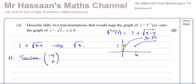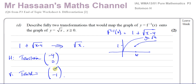Then it has to go 1 unit down for us to go from y = 1 + √(x − 4) to y = √x. So the second transformation is a translation of (0, −1) — one unit down. Remember, inside the function the effect is opposite: to shift left by 4, you replace x with x + 4 inside, giving (x + 4 − 4) = x. Together these two translations fully map f⁻¹(x) to √x.